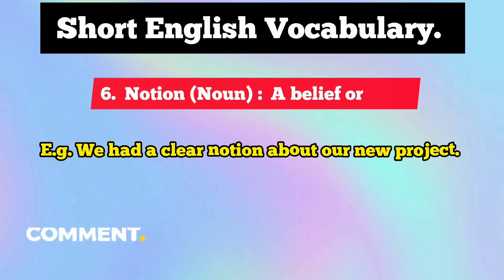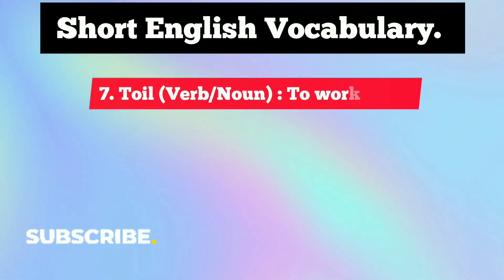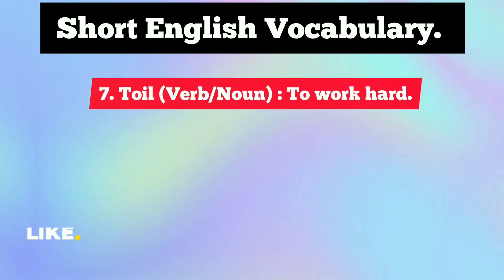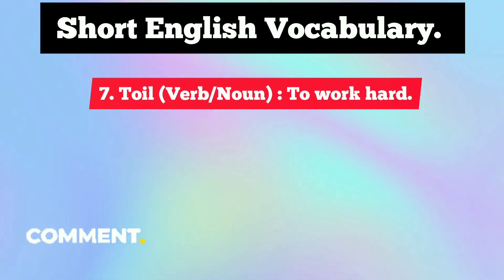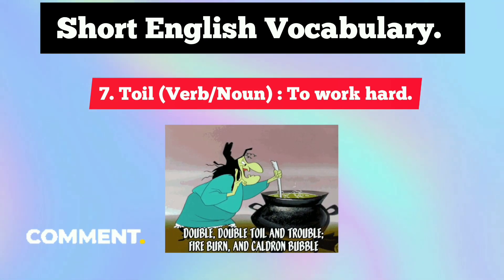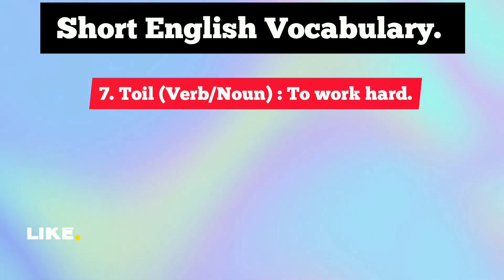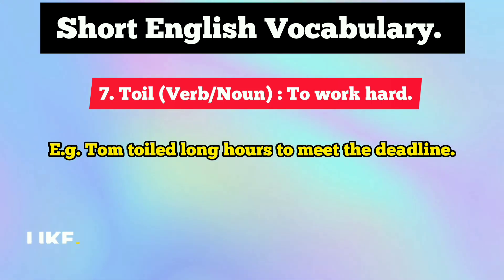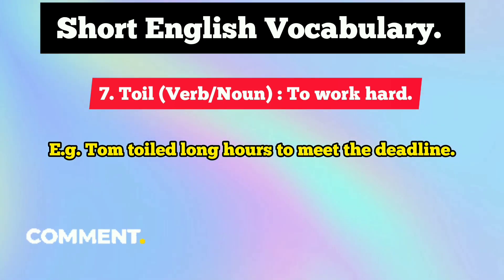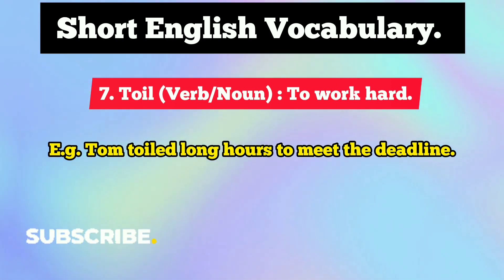The seventh short English vocabulary word is 'toil.' It can be used as a verb as well as a noun, and the meaning is to work hard. For example: 'Tom toiled long hours to meet the deadline,' meaning he worked hard for long hours to meet the deadline.